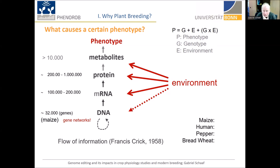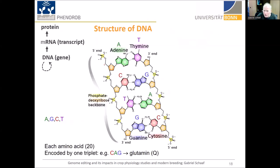Genomes come in different sizes. Maize, for example, has 2.4 gigabases — similar to humans and pepper. In a hexaploid organism like bread wheat, you have 17 gigabases. These gigabases refer to the constitution of the DNA. It contains four different nuclear bases: adenine, thymine, guanine, and cytosine. They are linked in one strand to an antisense strand via a sugar molecule called deoxyribose and a phosphate. An important point is that there are only four different bases — A, G, C, T — regardless of organism.